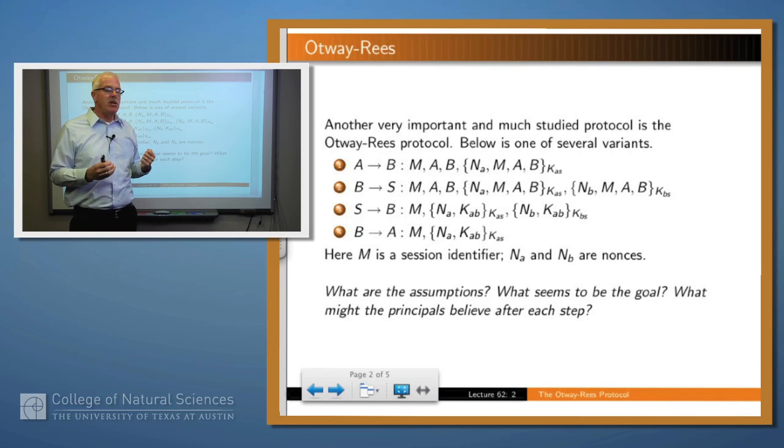Then B generates a message to S saying: I'm B, A wants to talk to me, and here's some information which lets you know that it really is A and B that are trying to communicate, because there's a piece encrypted with K_AS which could only have come from A, and a piece encrypted with K_BS which could only have come from B.